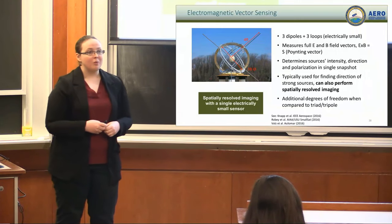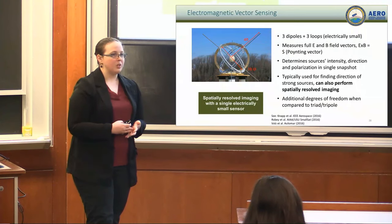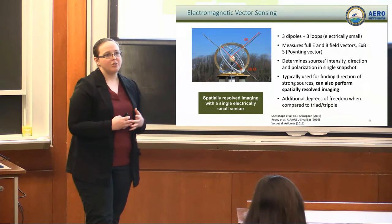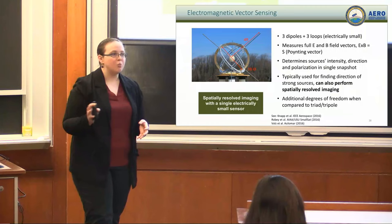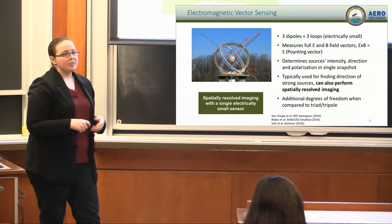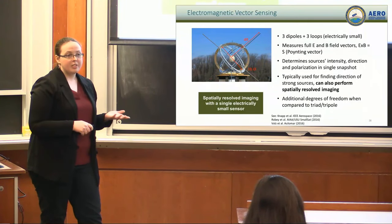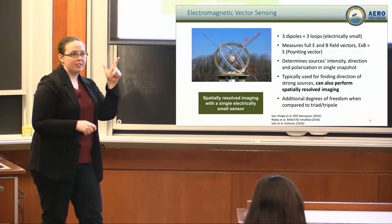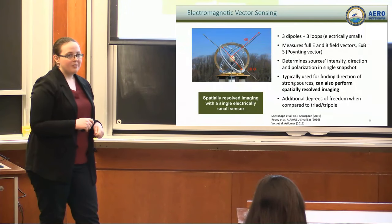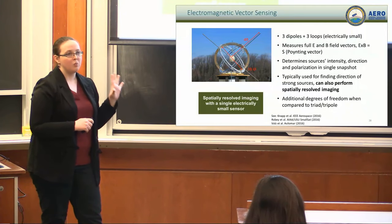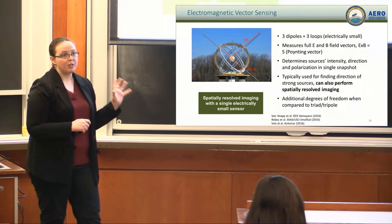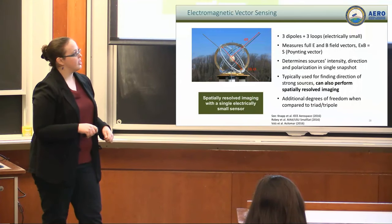So, E cross B gives you the pointing vector, where the radiation came from. So, vector sensors are great tools for direction finding. And not only direction finding, they also fully determine the polarization and, of course, the intensity of any incoming radiation. So, in terrestrial applications, they're used for finding bright things. Where is the guy with the radio that we don't want to have a radio, right? Vector sensors are great for that. But, they can also perform spatially resolved imaging. This is something that I worked on as a grad student with people at Lincoln and Haystack. We actually took a vector sensor model and we did simulations and we showed that a vector sensor can make a map. It can do more than just say, like, there's one source in that direction.